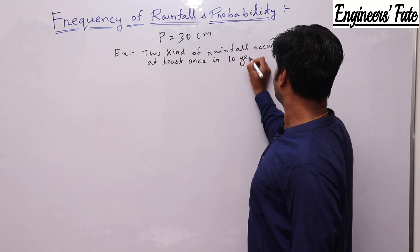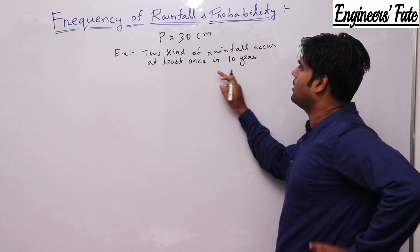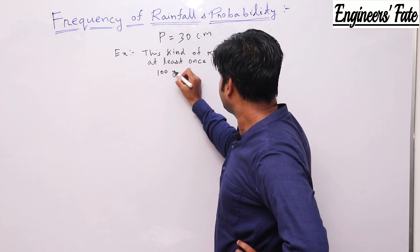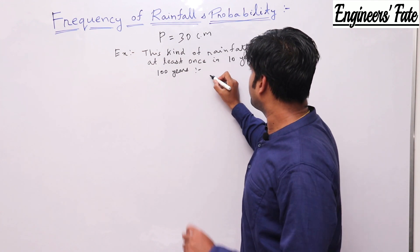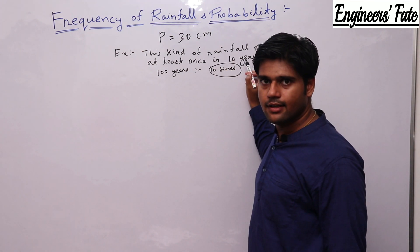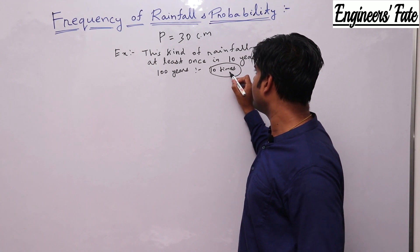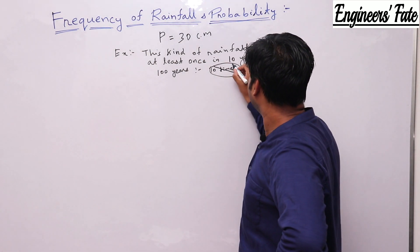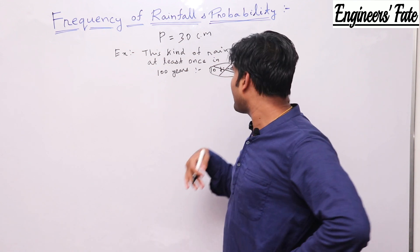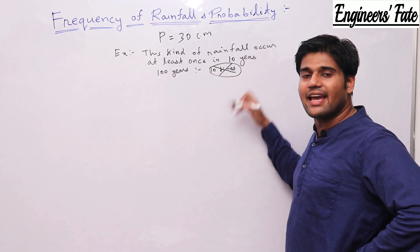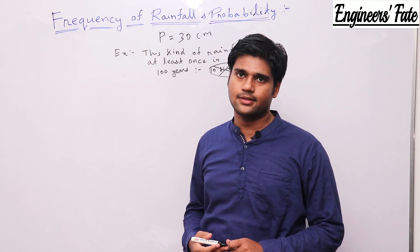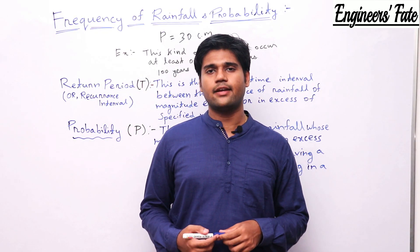If this kind of rainfall occurs at least once in 10 years, can we say that for 100 years this rainfall can occur 10 times? No, we can't say that. That's why we have to study further, because we can't say it will occur exactly 10 times — it can be more or it can be less.